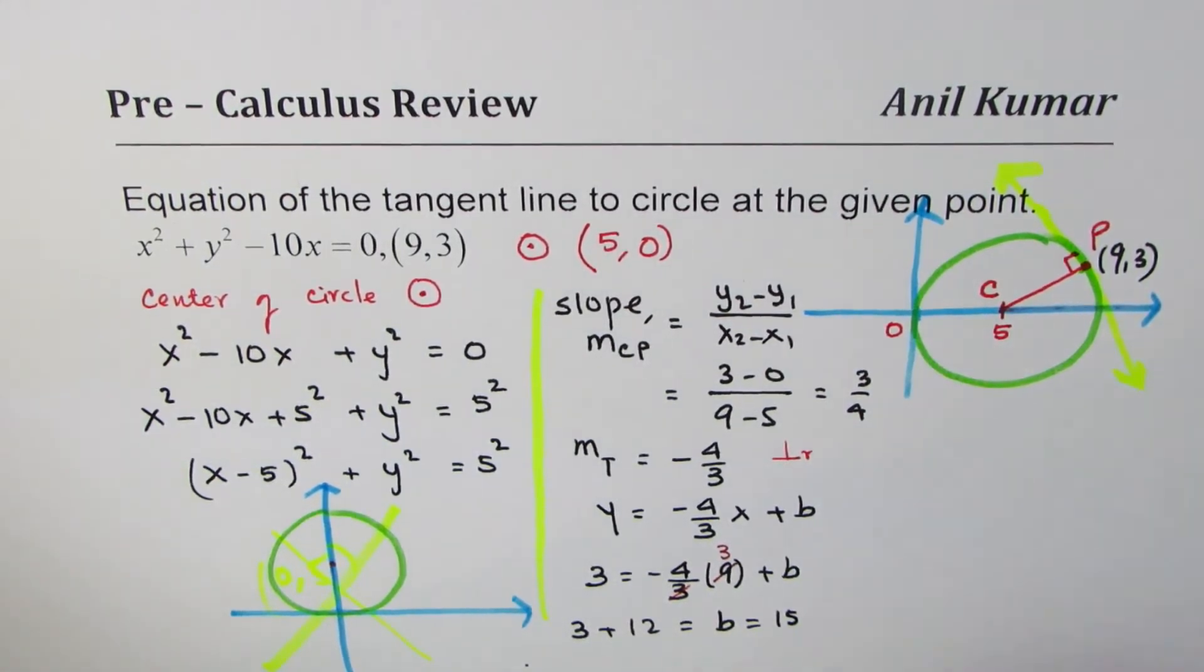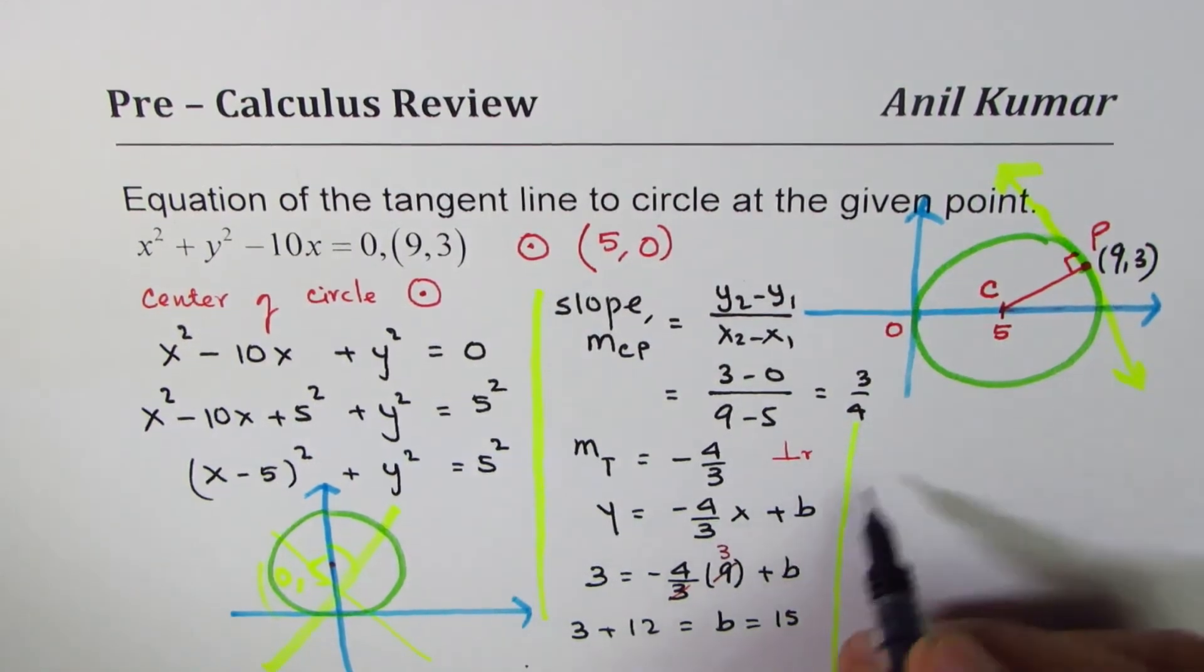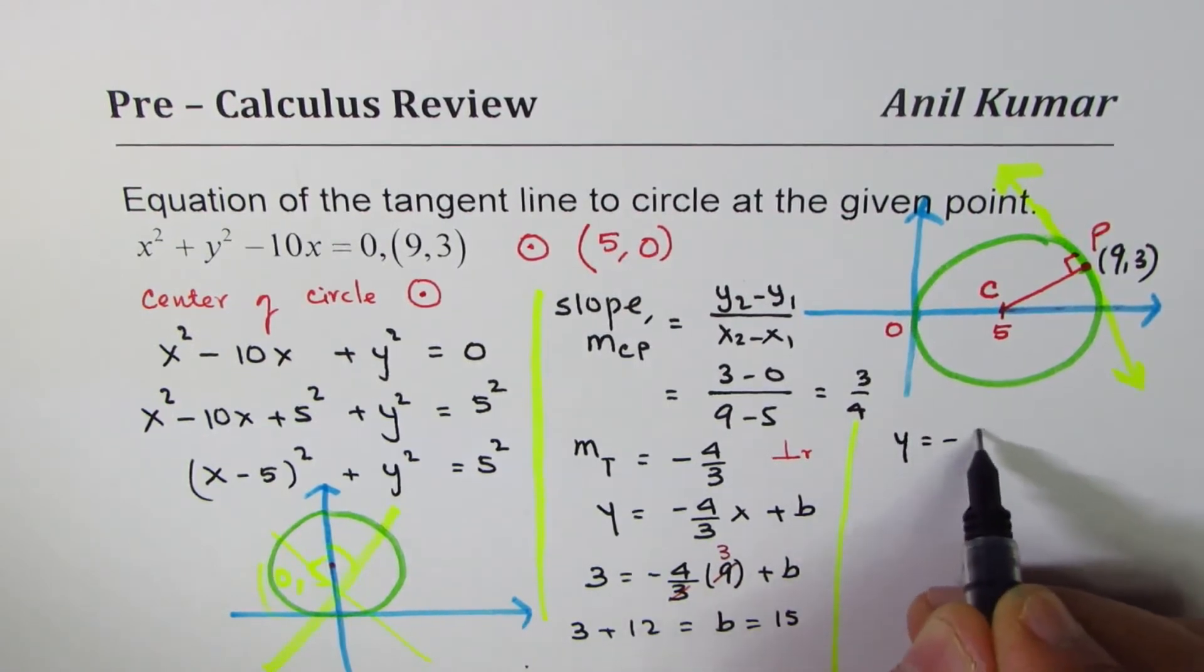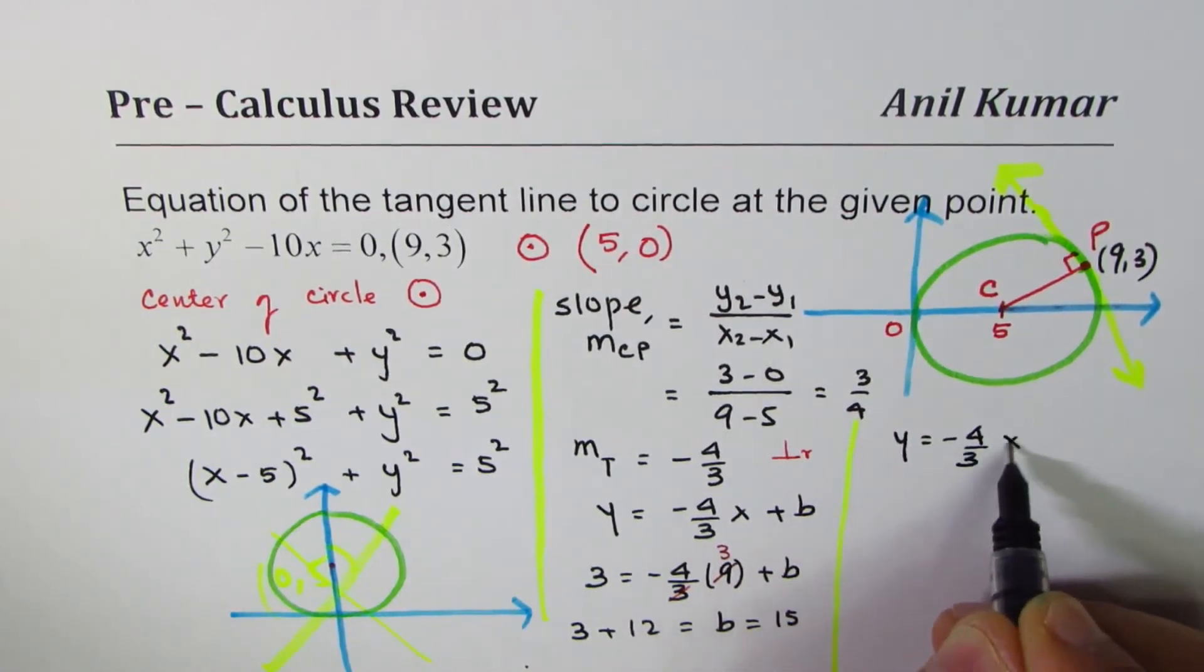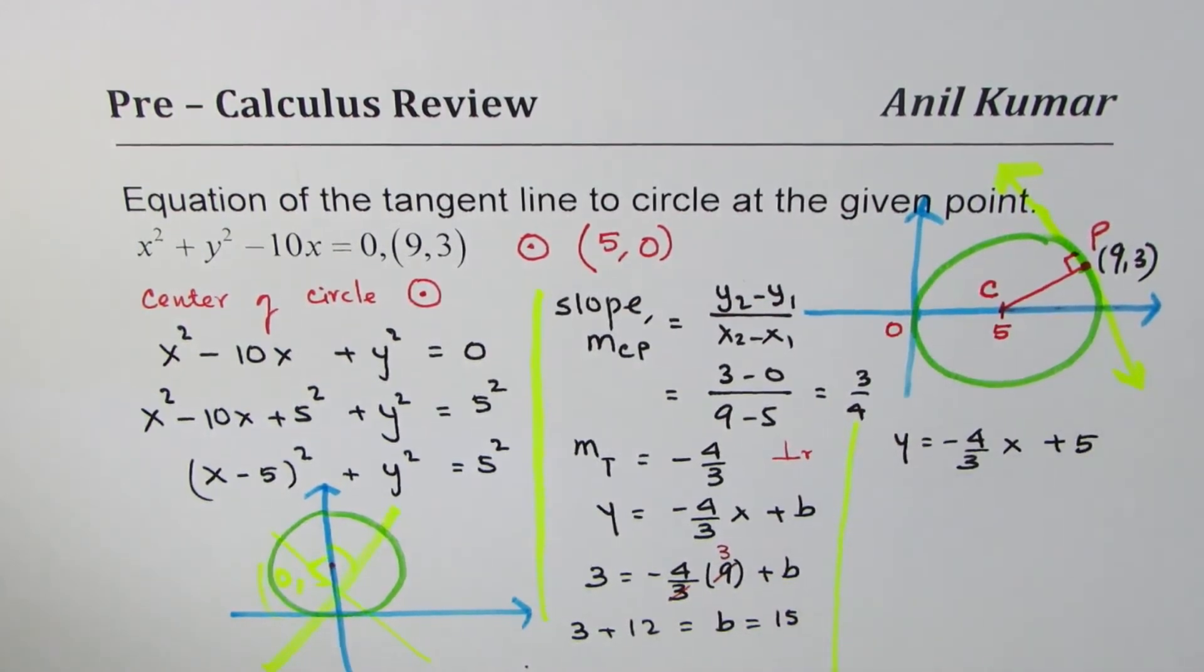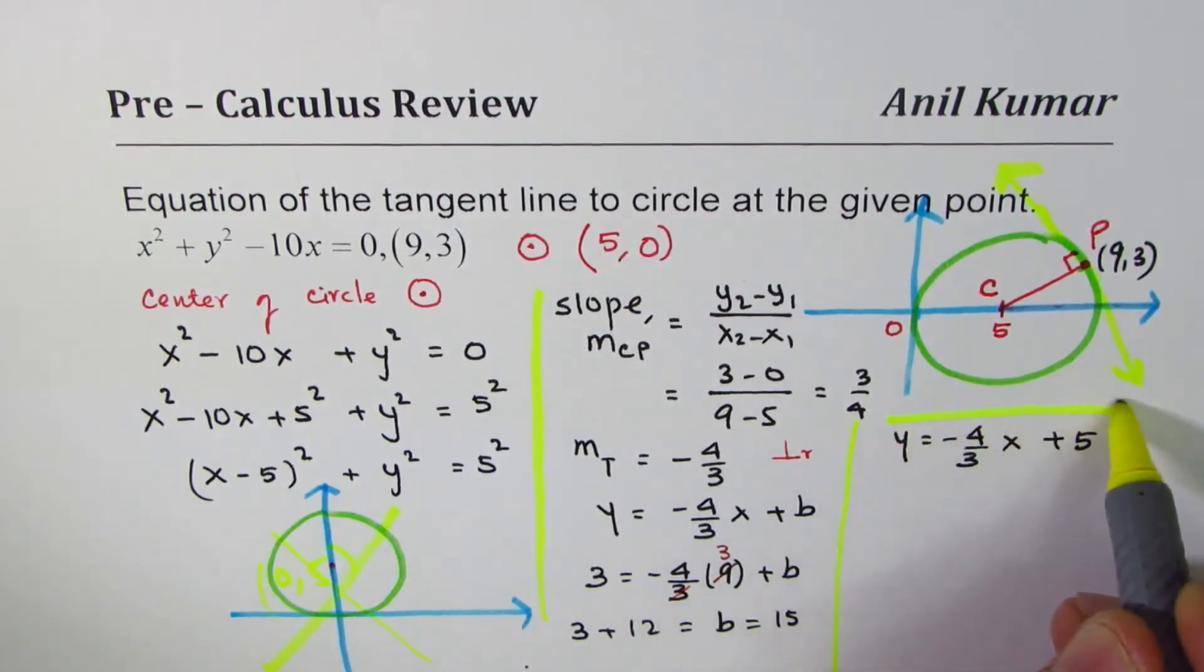Once you know b, you can write the equation of the tangent line, substituting b here. So we get y = -4/3x, b is 15, so plus 15. So that becomes our solution.